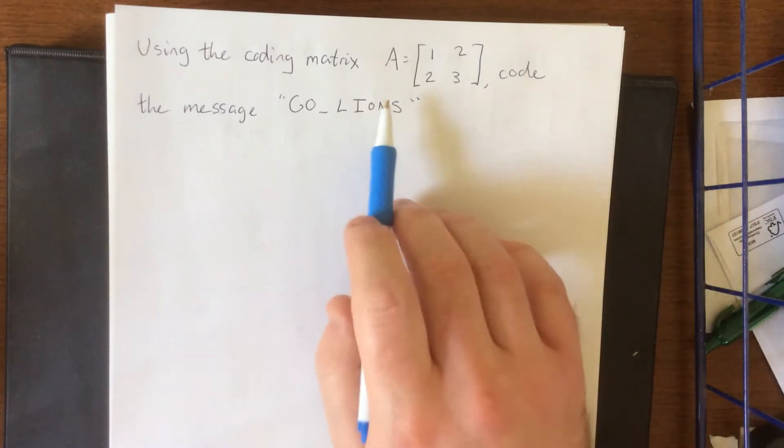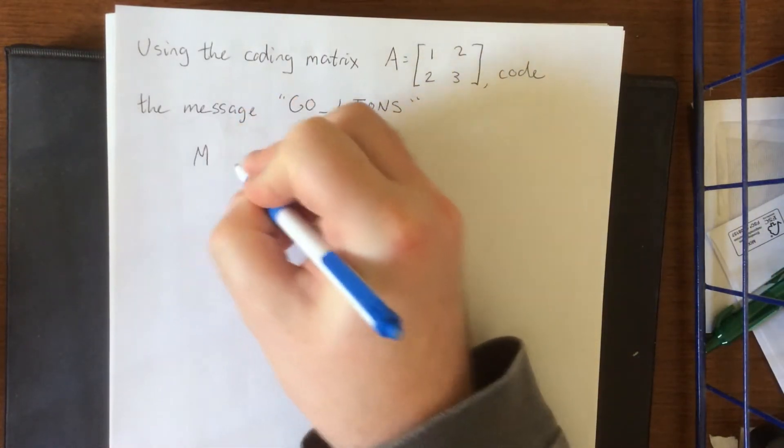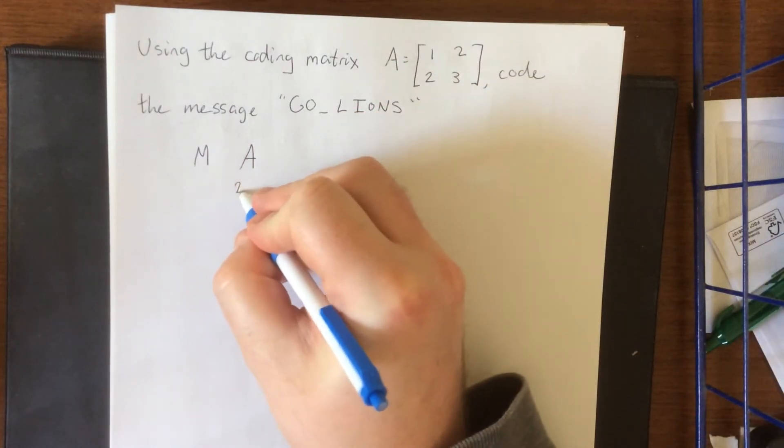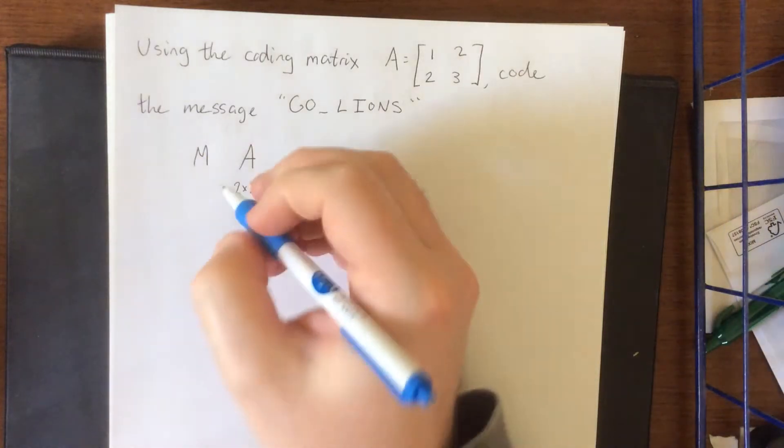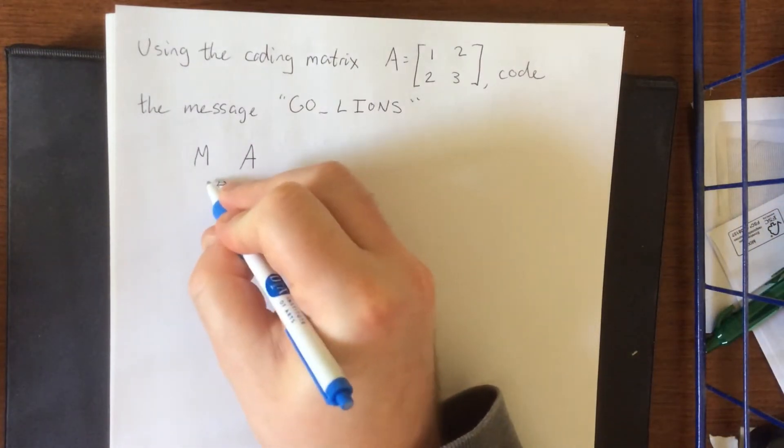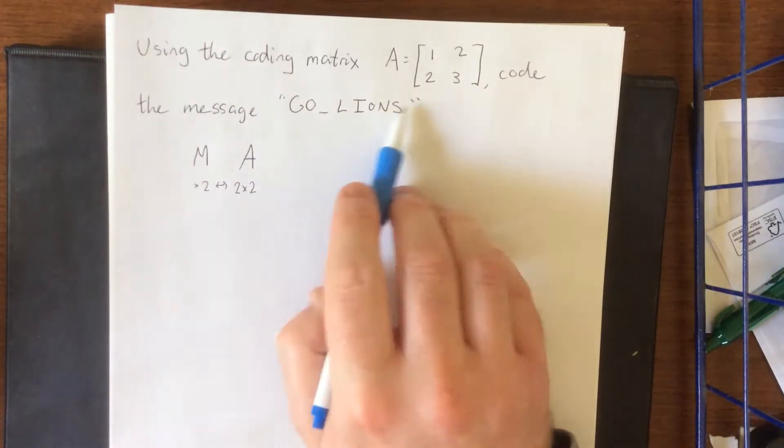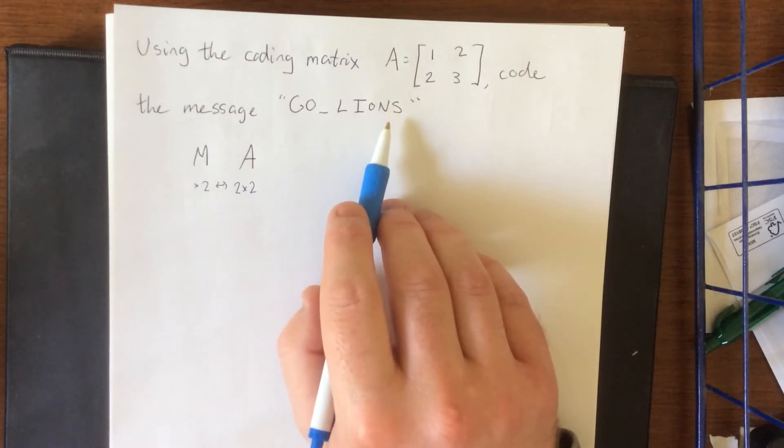Now we're going to be coding this message using a 2x2 matrix. So when we create our message matrix and we multiply by our coding matrix, coding matrix is going to be 2x2. As such we want to make sure that our message matrix has exactly two columns. Now at that point we're going to figure out how many rows it needs to have by counting the number of symbols that we have in here.